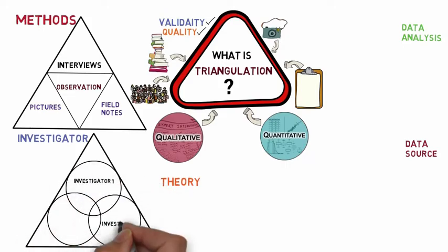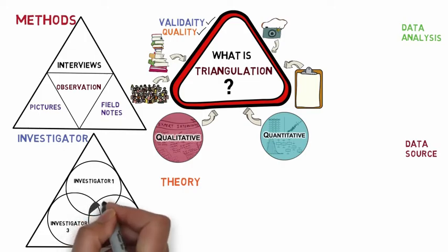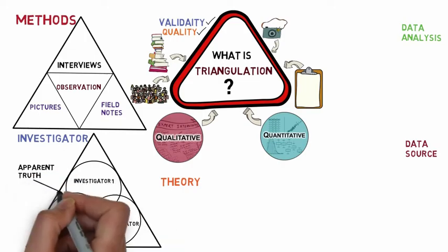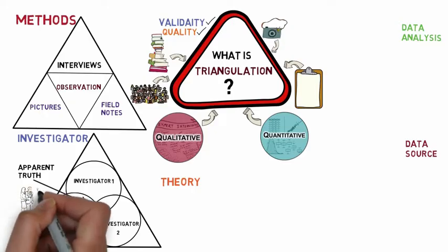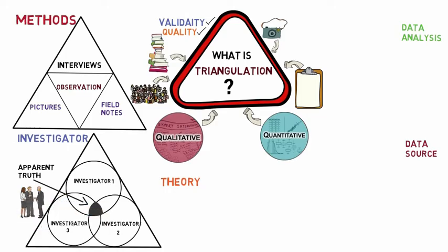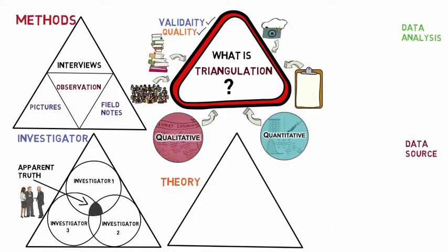The next is investigator triangulation. It includes the participation of two or more researchers in the same study to bring up the apparent truth or confirm the findings. This means involvement of more than one researcher at the time of data collection or analysis. For example, in a study of Russian elite perspectives, researchers and their local associates conducted the interviews, and summaries or transcripts of the interviews were checked and supplemented by other members of the interview team.